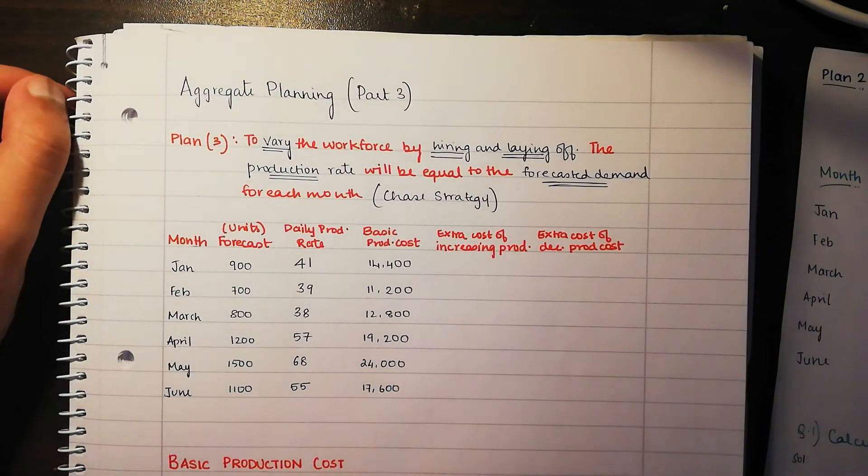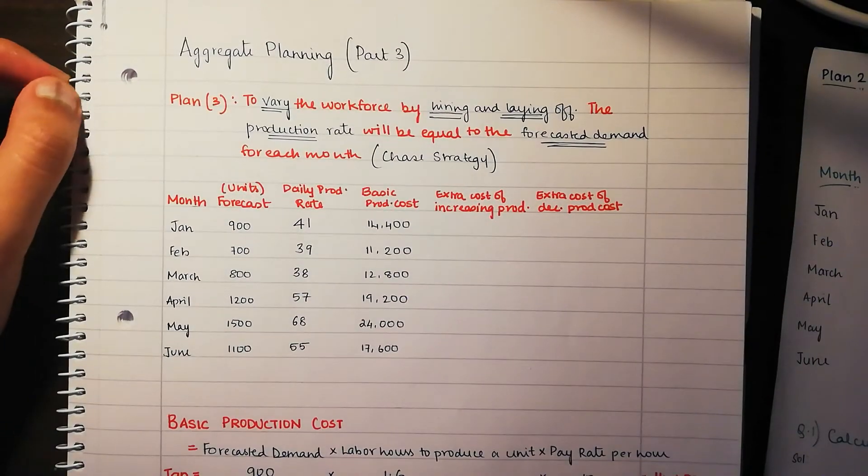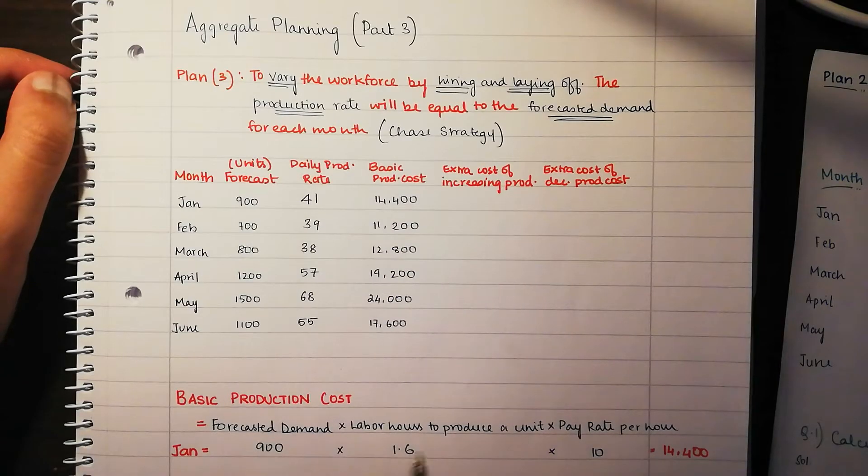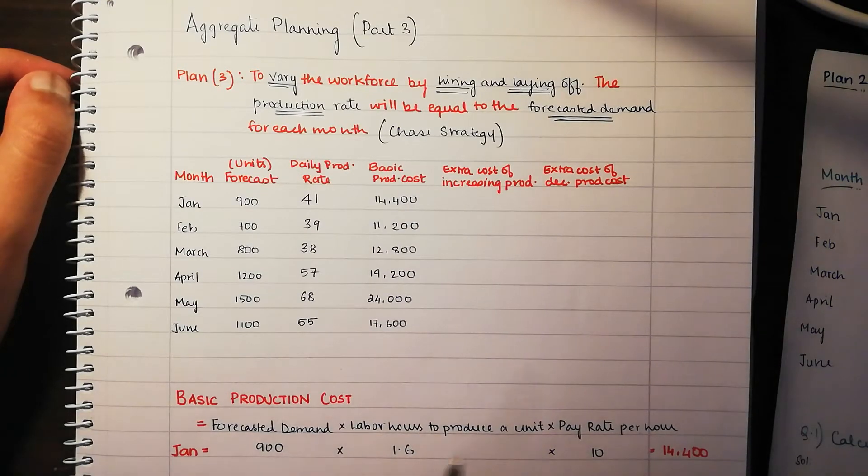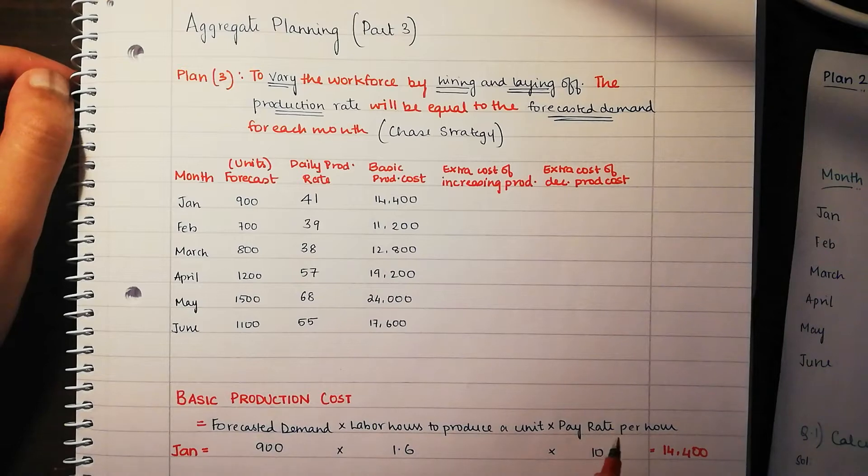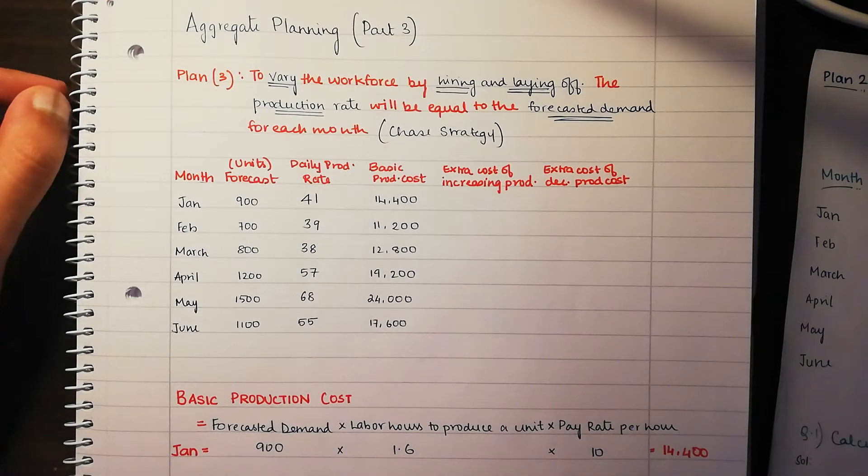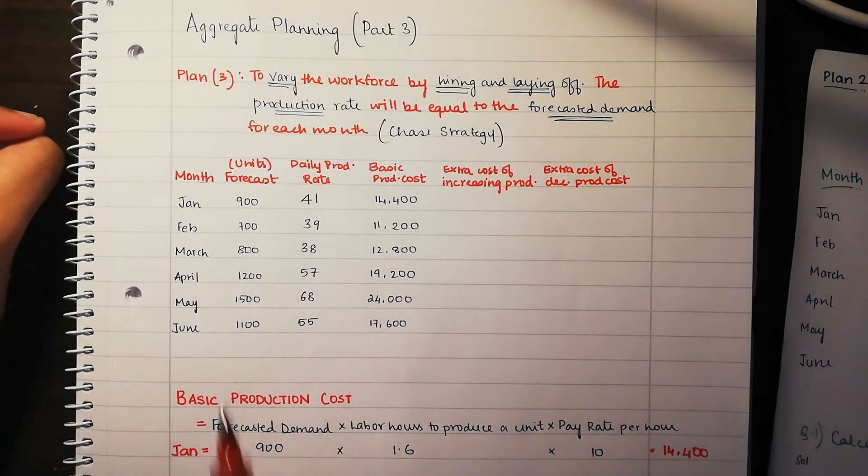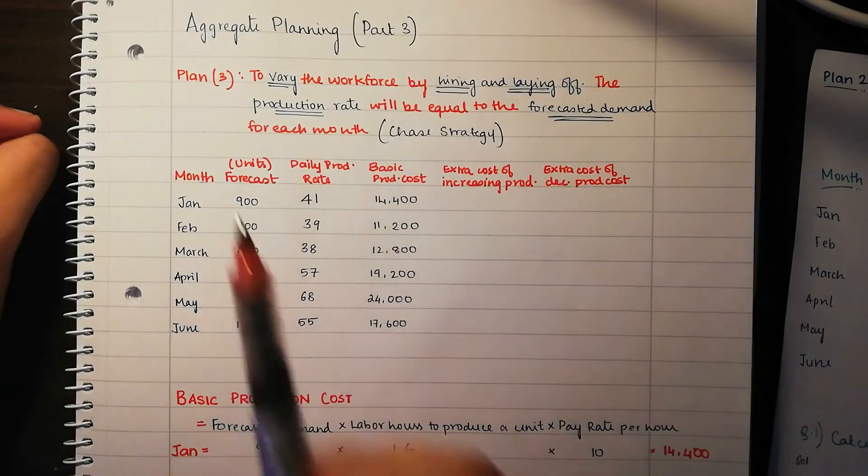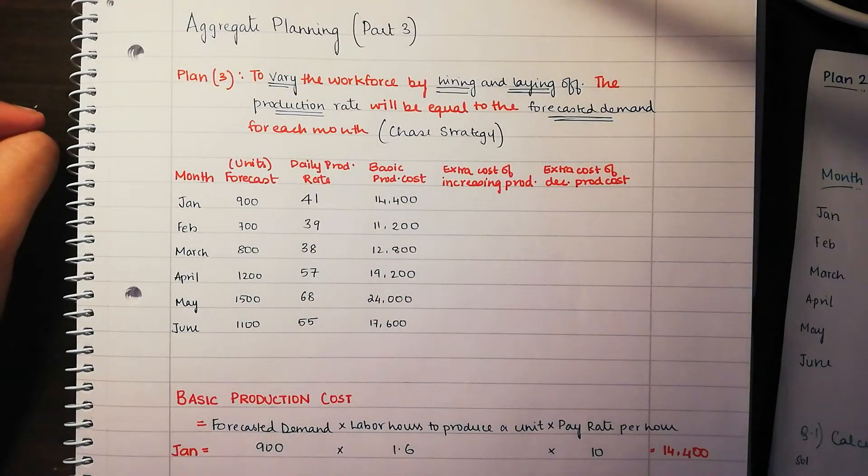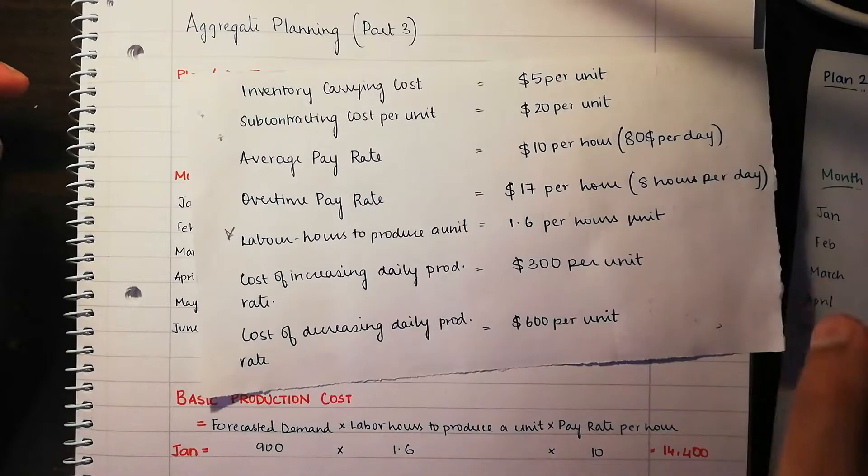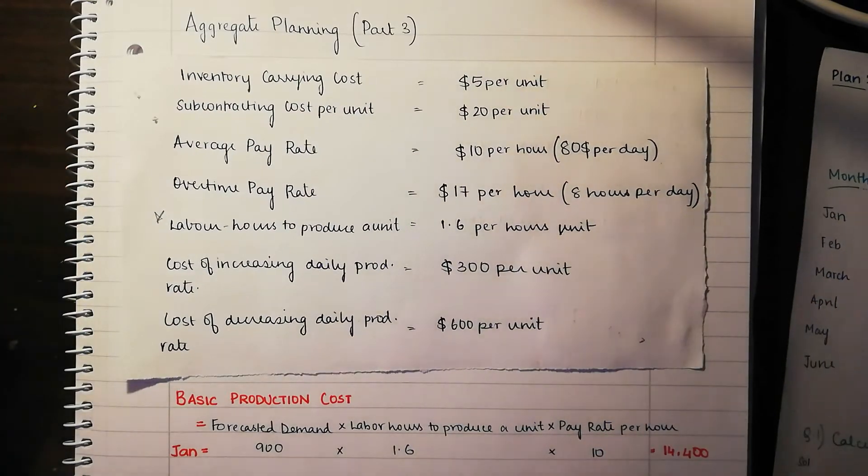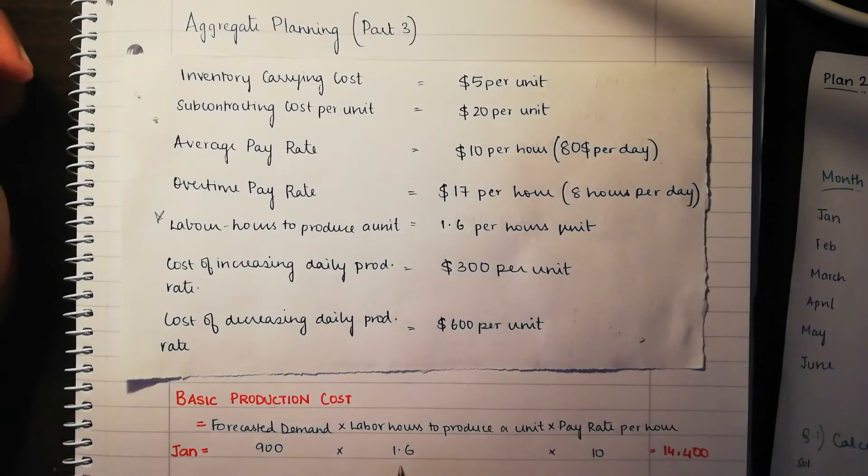Then we have the basic production cost. How do we find the basic production cost? It's really simple, we have the formula here: forecasted demand for that month, multiplied by labor hours to produce a unit, how many hours to produce one unit, multiplied by the average pay rate per hour. For January, if you're considering January, we're going to be taking our forecasted demand which is 900, multiply that times 1.6. How do we get that? From our little sheet which has made its cameo appearance.